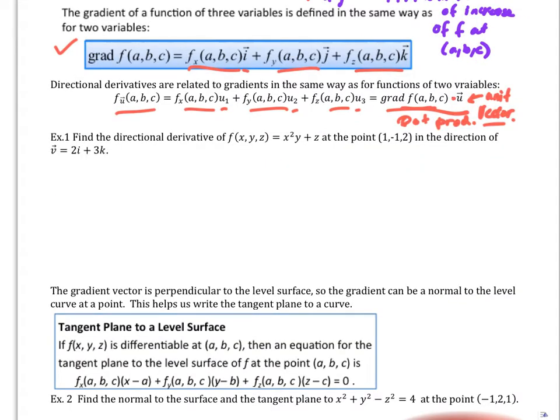So example number one, find the directional derivative of this function at the point (1, -1, 2) in the direction of the vector 2i plus 3k. I don't write the vectors over i and k but I should.